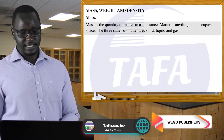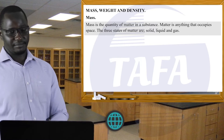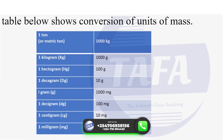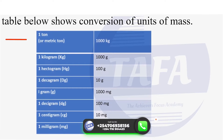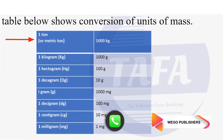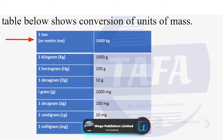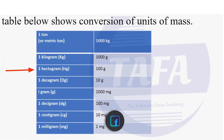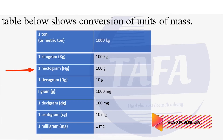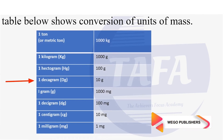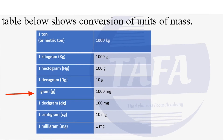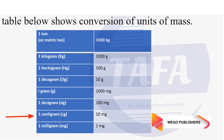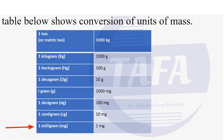Other common units are the ton, gram, and milligram. The table below shows the conversion of units of mass: one metric ton equals 1,000 kilograms; one kilogram equals 1,000 grams; one hectogram equals 100 grams; one decagram equals 10 grams; one gram equals 1,000 milligrams; one decigram equals 100 milligrams; one centigram equals 10 milligrams; and one milligram equals one milligram.